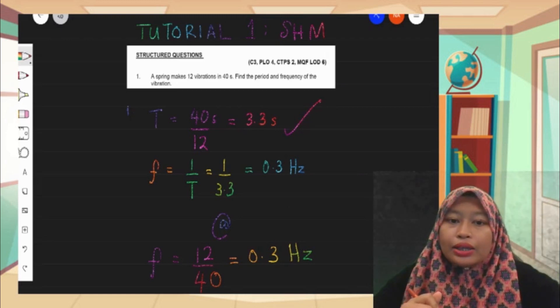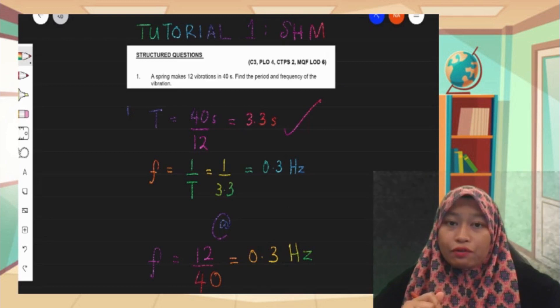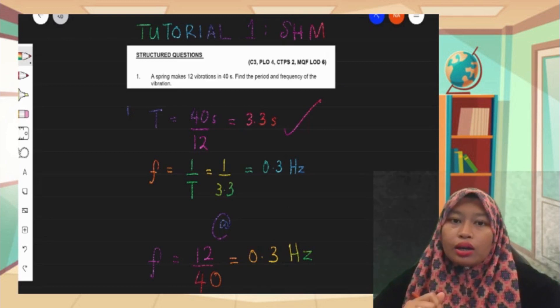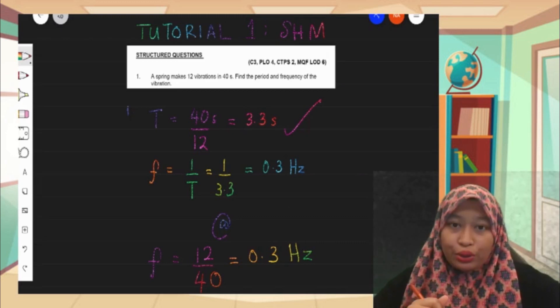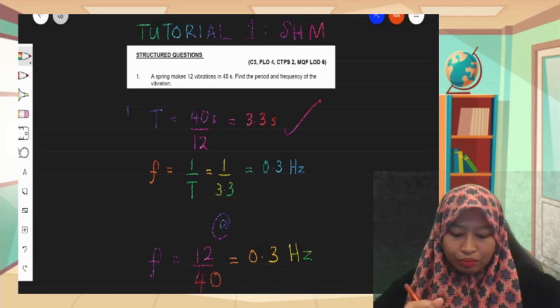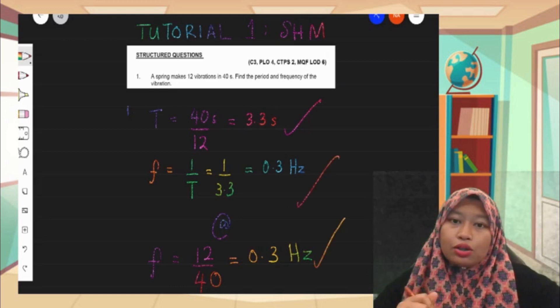For frequency, either you use 1 over T, the formula that we usually use for frequency, or you can divide 12 by 40. Both will give you the same answer, 0.3 hertz or 0.3 per second. So that's all for number one.